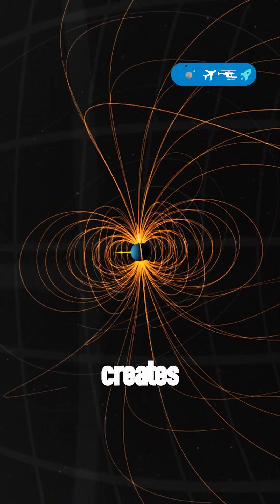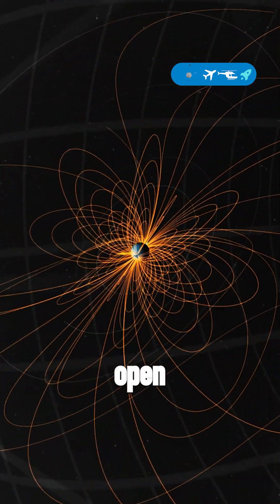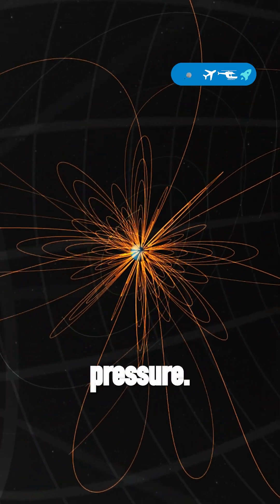This extreme tilt creates a magnetic field that behaves erratically, allowing it to open and close in response to the solar wind's pressure.